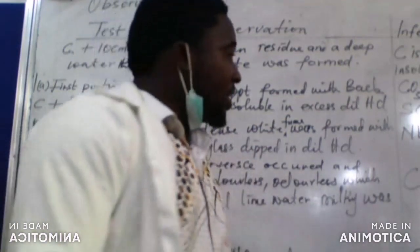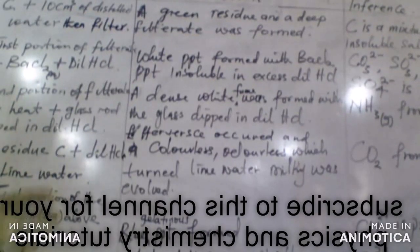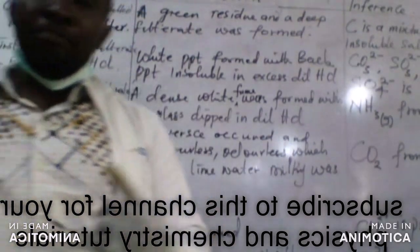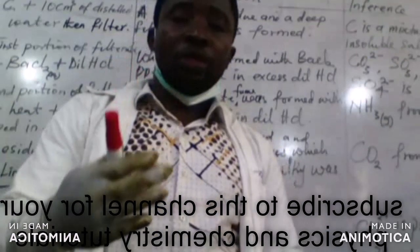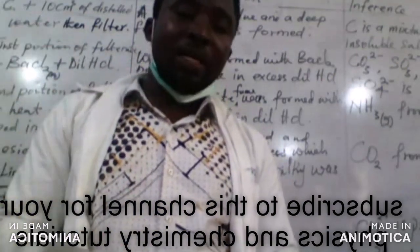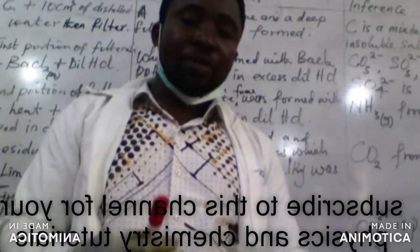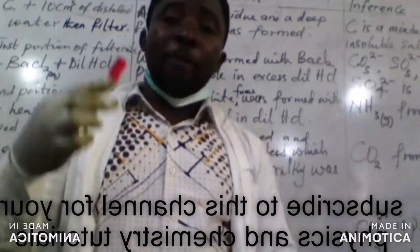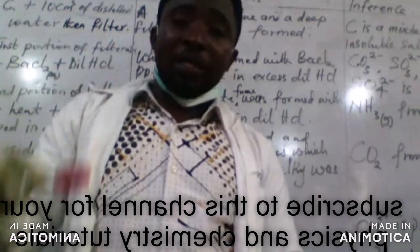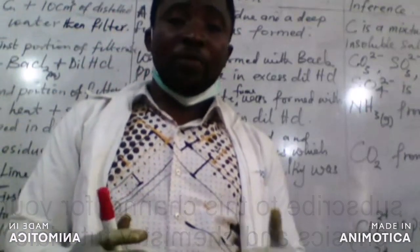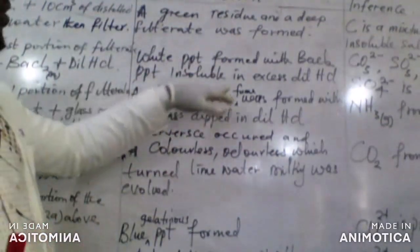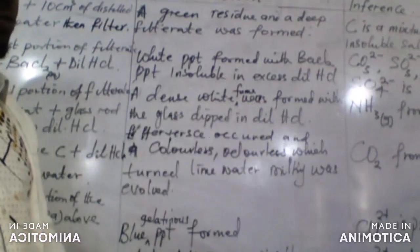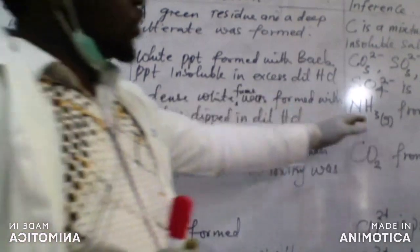The next instruction says we should heat the second portion of the filtrate, then bring a glass rod dipped in dilute hydrochloric acid close to the mouth of the test tube. When you bring the glass rod close, a dense white fume is formed — as observed in the practical section. Our conclusion is that ammonia gas is present, indicating an ammonium ion.